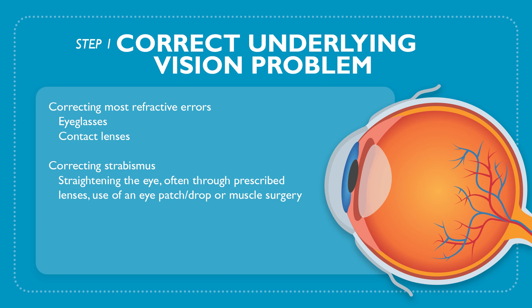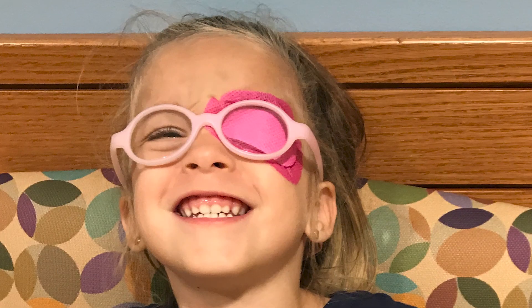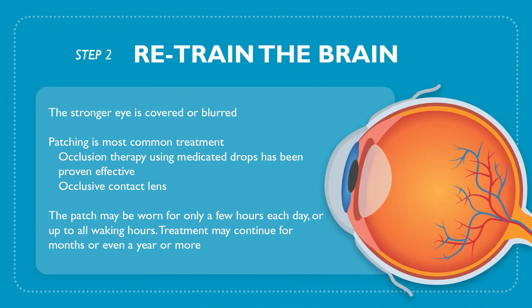Then we need to retrain the brain. When we start retraining the brain, we are going to cover up the strong eye, forcing that weak eye to do the seeing. The most common way of doing this is adhesive bandage patch therapy — we wear the bandage patch over the strong eye, forcing that weak eye to do the seeing. We can also do this using drops that blow your pupil really big, forcing you to not be able to see out of that eye, or an occlusive contact lens. The methods may vary based on what your eye doctor thinks is best, however we're always occluding that strong eye, forcing the weak eye to do the seeing.